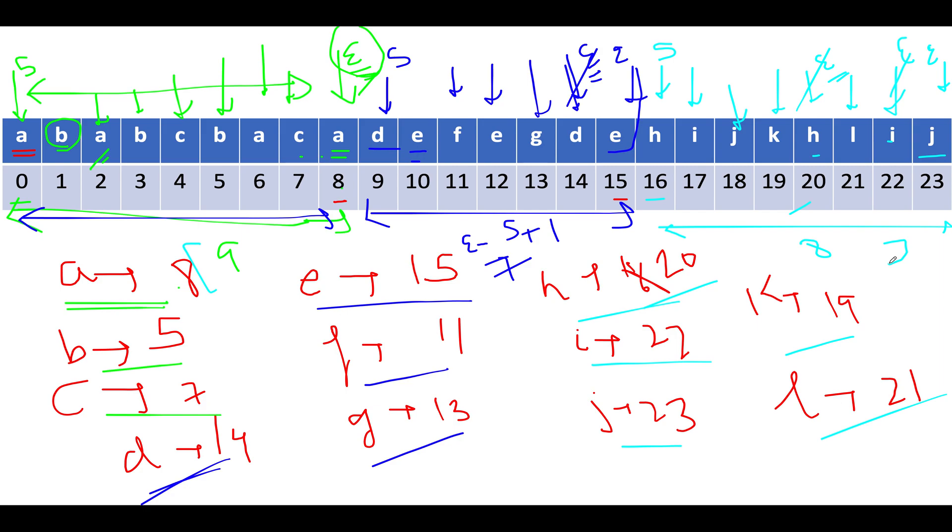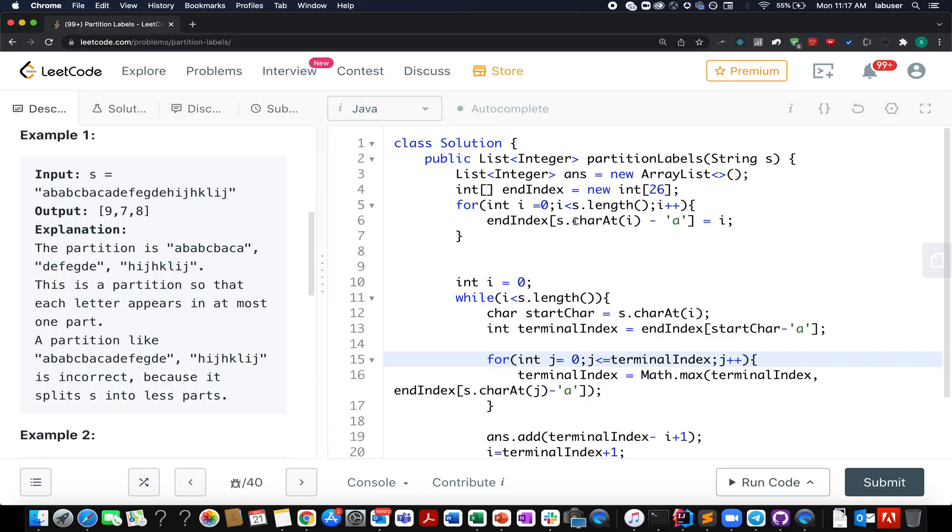Let's get started with the coding section. The time complexity of this approach is order of n and space complexity is constant time. Here I have created my answer variable and I created an end index array of size 26 because it contains only English characters. I start iterating over the string and with each iteration I update the end index corresponding to the current character. This will help me store the last index at which each character appears.